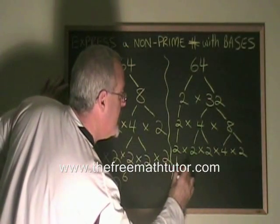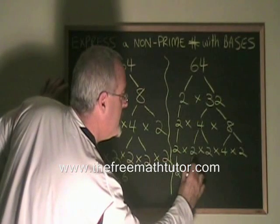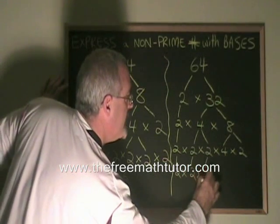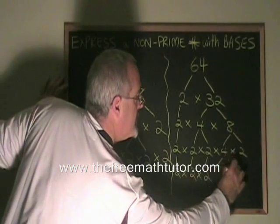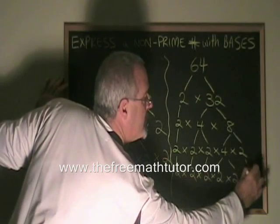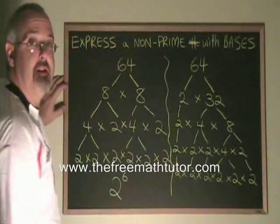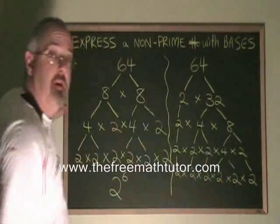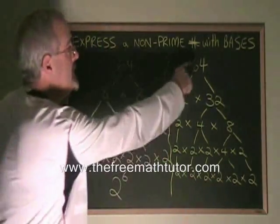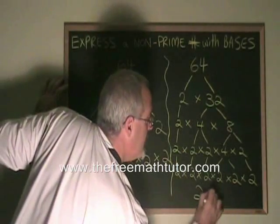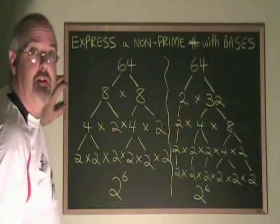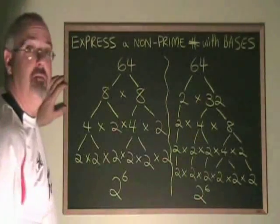This 2 gets carried down. This 2 gets carried down. This 2 gets carried down. This 4 turns into 2 times 2. And this 2 gets carried down. We end up with the same result. We have 6 2s lined up along the bottom. So, expressed as its simplest base to an exponent, 64 is still 2 to the power of 6. It doesn't matter which numbers we use when we start. We will always end up with the same result.